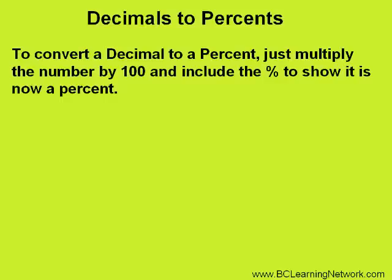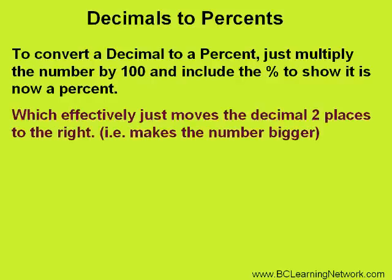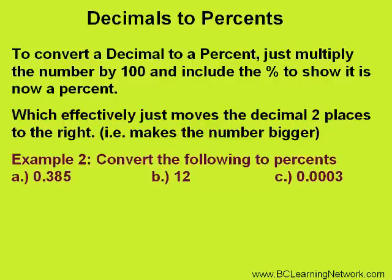Now, let's do the inverse — we will convert decimals to percents. To convert a decimal to a percent, instead of dividing, we will multiply the number by 100, and remember to include the percent sign after it. This, of course, just moves the decimal two places to the right. Here are some examples.